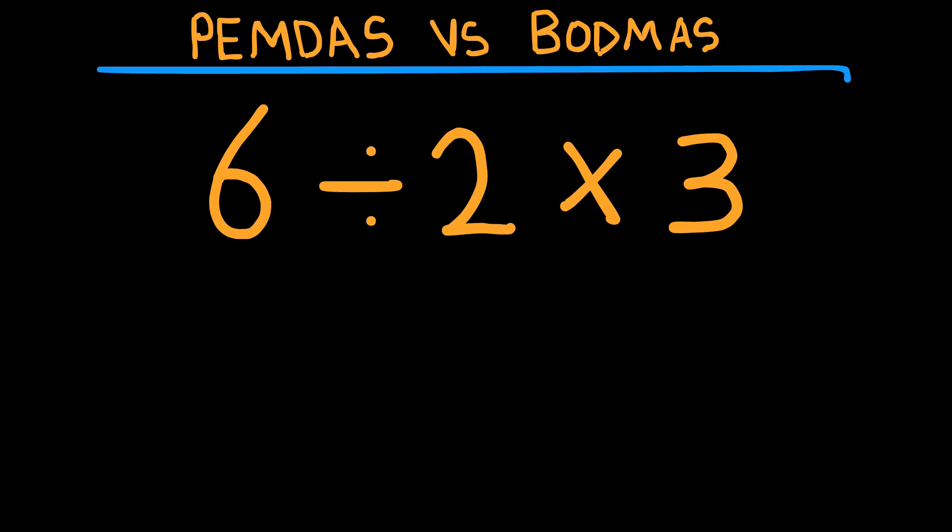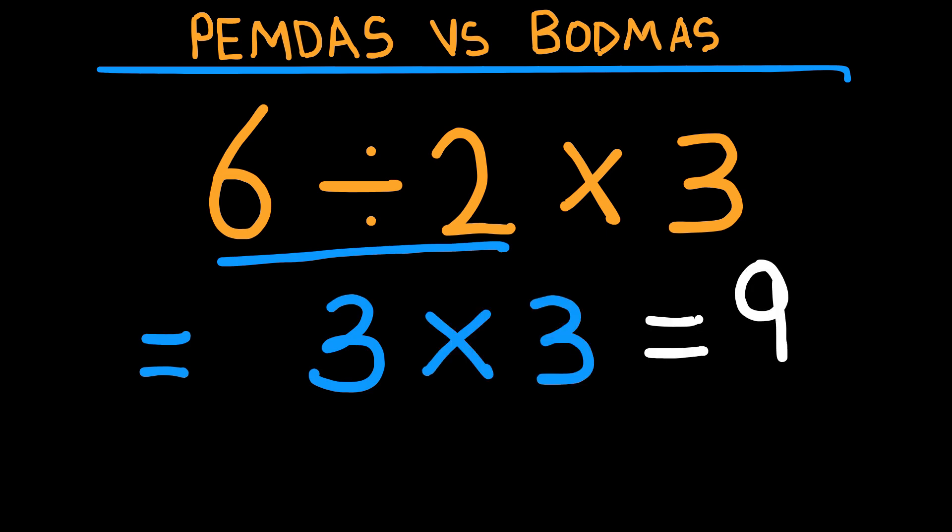Therefore, 6 divided by 2 equals 3, then 3 times 3 equals 9. So does that settle it? Not exactly.